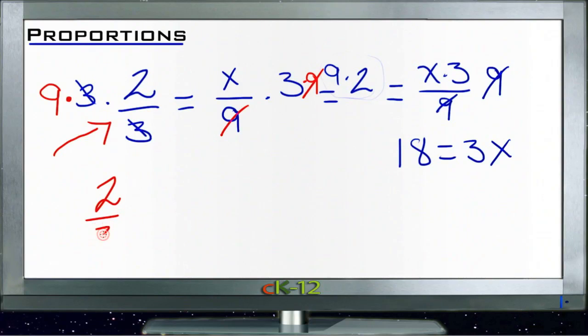If I take my original proportion here, two-thirds equals x over nine, and realize that if I were to multiply this side by three, the three would just go away. If I multiply this side by three, I actually have to multiply x by three. And if I multiply this side by nine, the nine goes away, and I have to multiply this side by two.